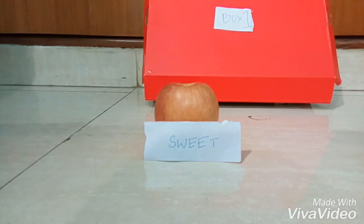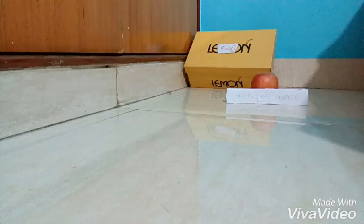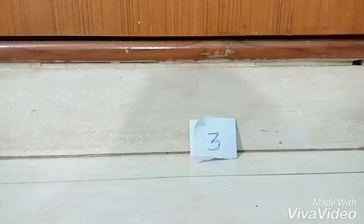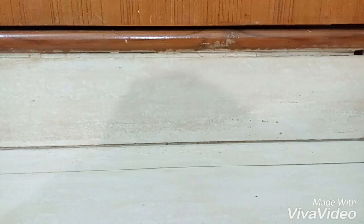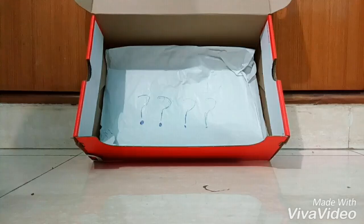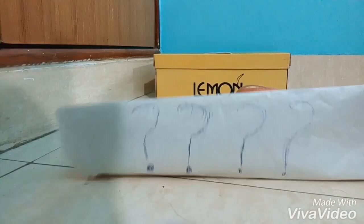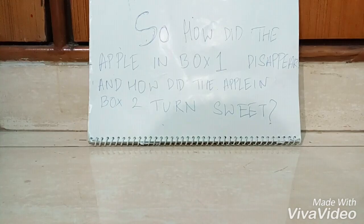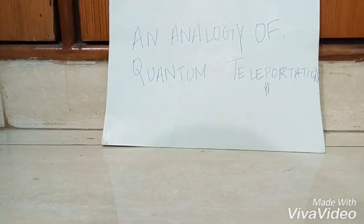In this experiment, the sweet apple goes in box one. Miles apart, an apple that is sweet and sour goes in box two. Three, two, one — kaboom! Now you can see that the apple in box one has disappeared, and in box two the sweet-and-sour apple has turned sweet. How did the apple in box one disappear, and how did the apple in box two turn sweet? This experiment was an analogy of quantum teleportation.